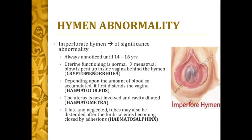Hymen abnormality — imperforate hymen is a significant abnormality that may not be noticed until 14 to 16 years of age. Urethral functioning is normal, but menstrual blood flow is retained inside the vagina behind the hymen. Depending upon the amount of blood accumulated, it first distends the vagina. The uterus becomes involved next, and the cavity is dilated. If late and neglected, the tubes may also become distended after the fimbriated ends become closed due to adhesions.